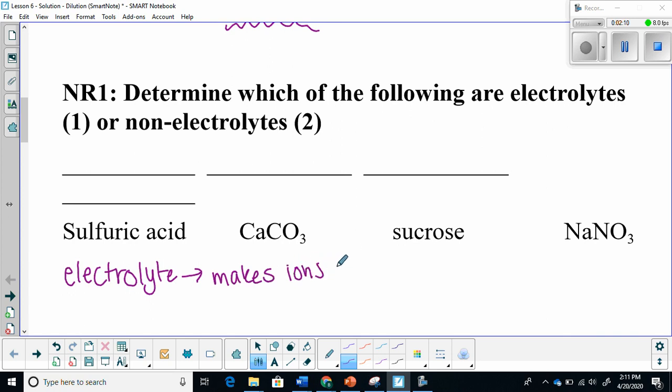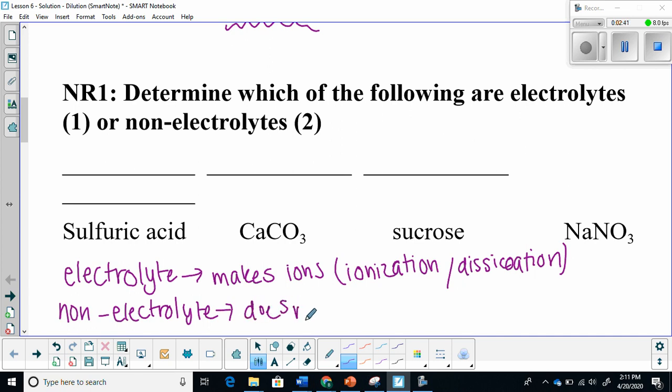So if we were testing this in a lab setting, we would see what conducts electricity. This happens as a result of ionization, so when an acid is put into water, and dissociation. Then we have a non-electrolyte. A non-electrolyte basically does not make ions. So these are things that are insoluble or undergoing dissolving.